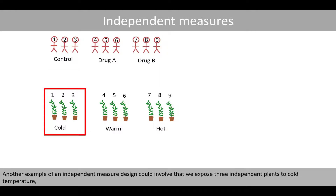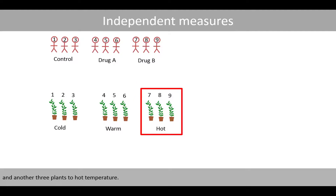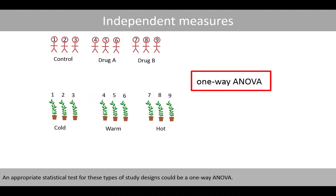Another example of an independent measures design could involve exposing three independent plants to cold temperature, three plants to warm temperature, and another three plants to hot temperature. We could then compare the growth of the plants in these three conditions over the same time frame, requiring in total nine independent plants. An appropriate statistical test for these types of study designs could be a one-way ANOVA.